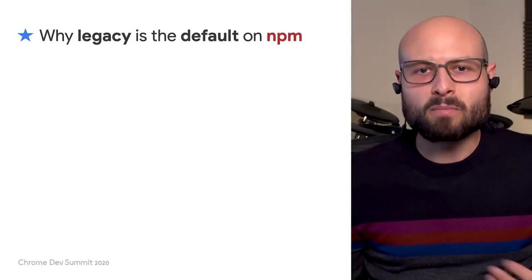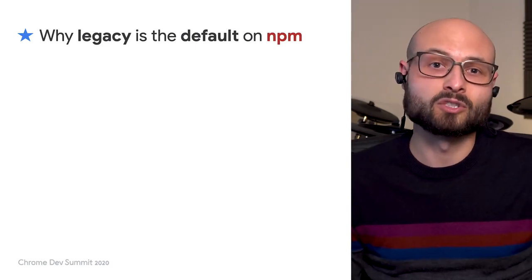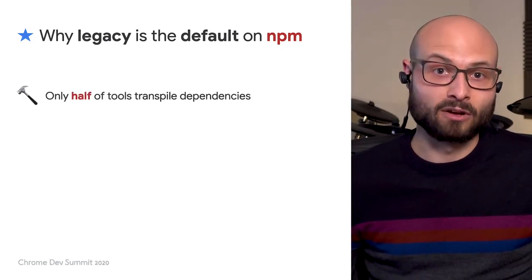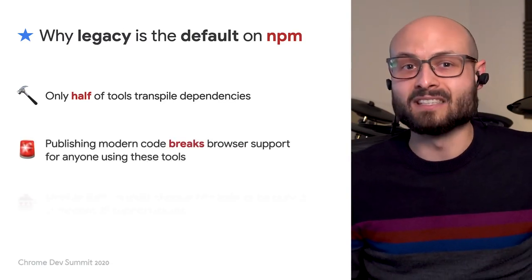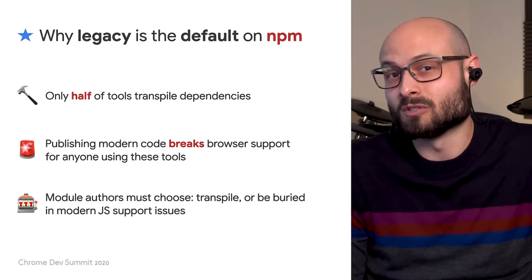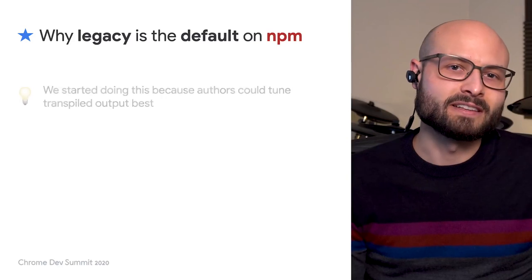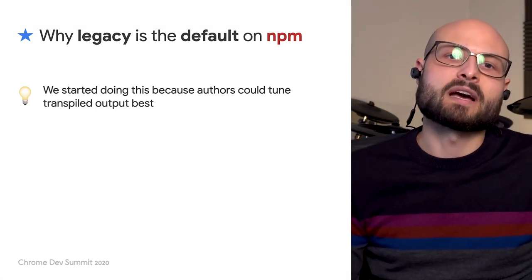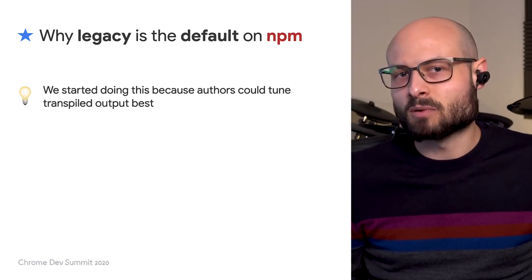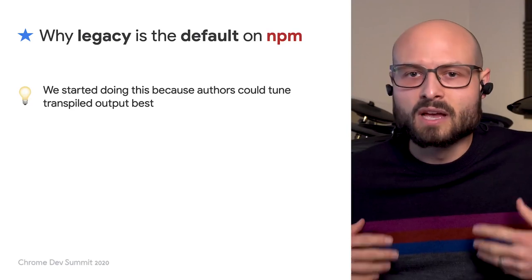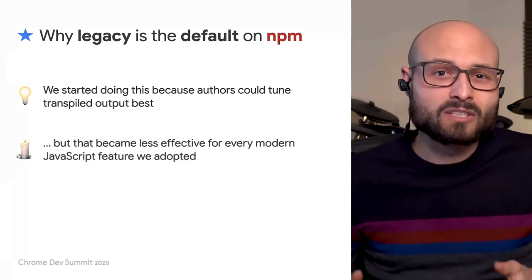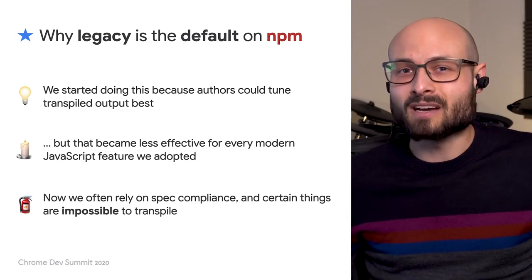So why is this? A big part of the reason is that package authors can't rely on application bundlers to transpile dependencies to ensure browser support. We estimate that only half of build tools transpile dependencies at all, which means modern code published to NPM gets bundled as-is by the remaining tools and unexpectedly breaks browser support for those users. Package authors came by this honestly — as modern JavaScript got popular, packages still published in ES5 because it could be hand-tuned. Where general-purpose transpilers have to be spec-compliant so they don't break valid code, package authors could transpile to more efficient output by making assumptions specific to their source.